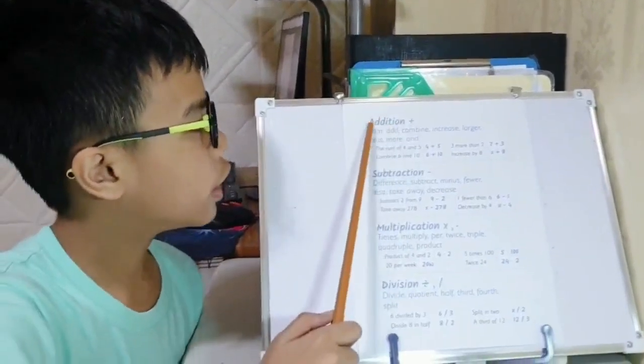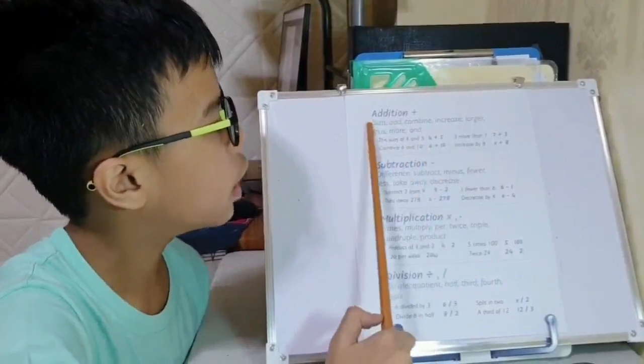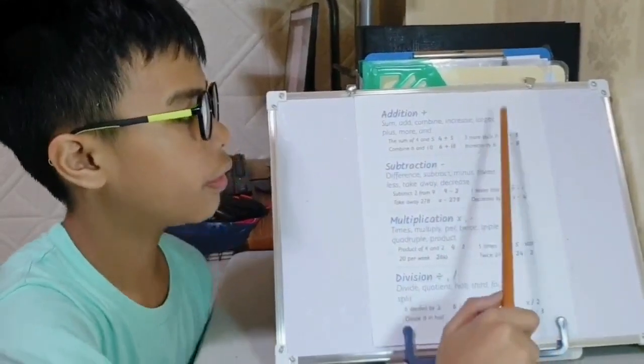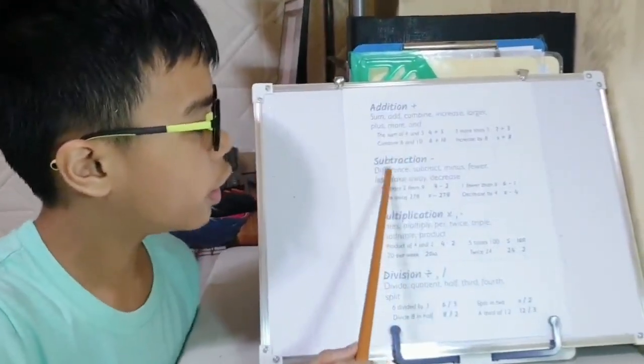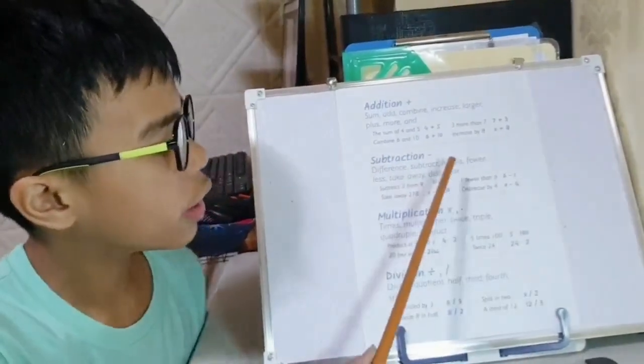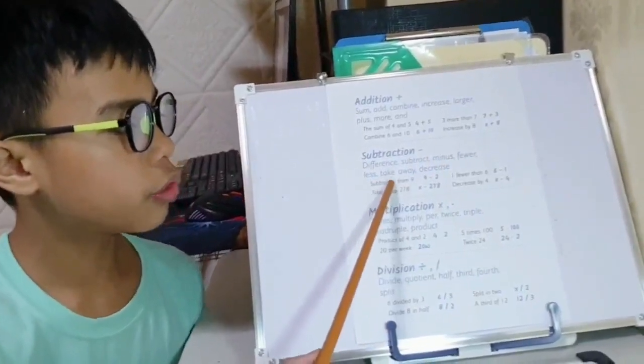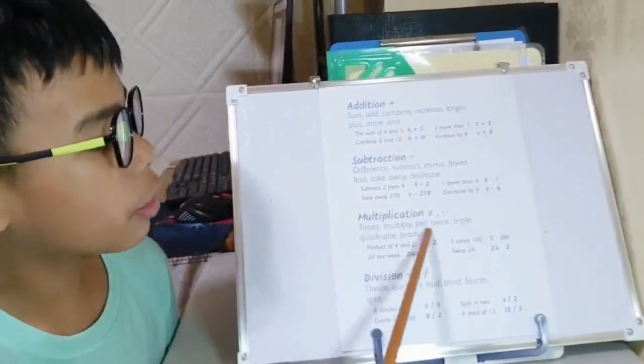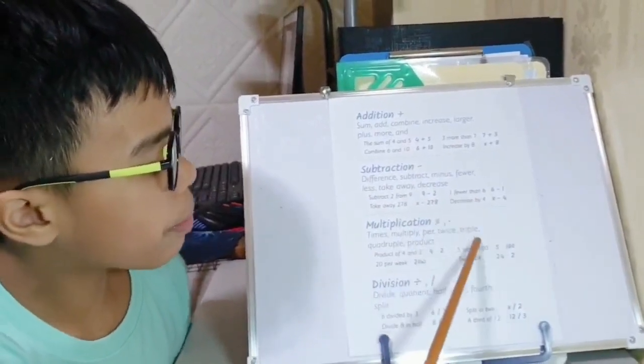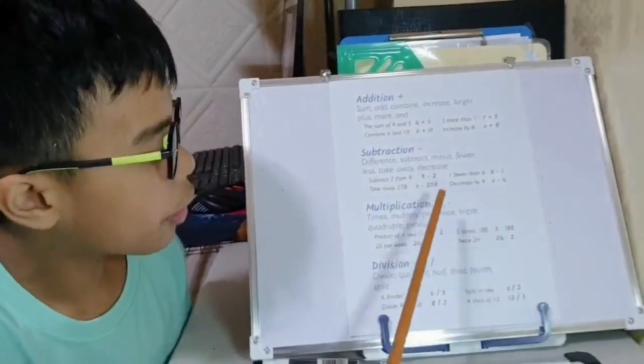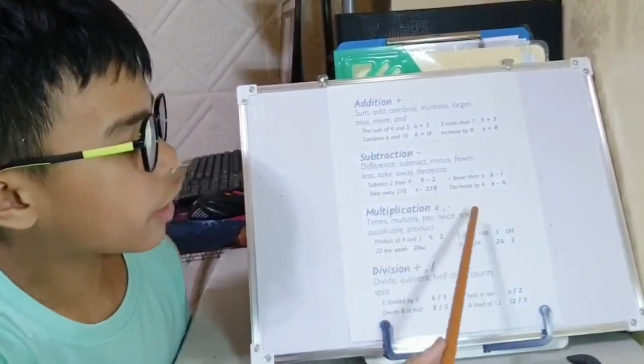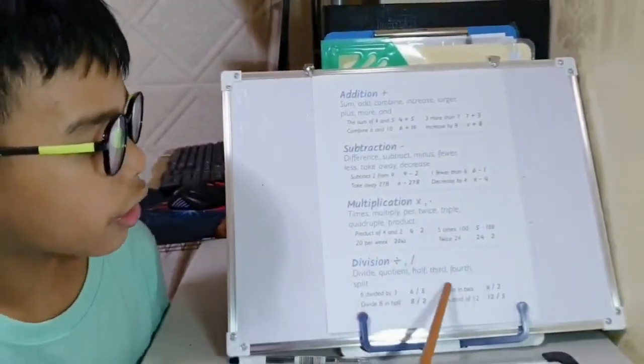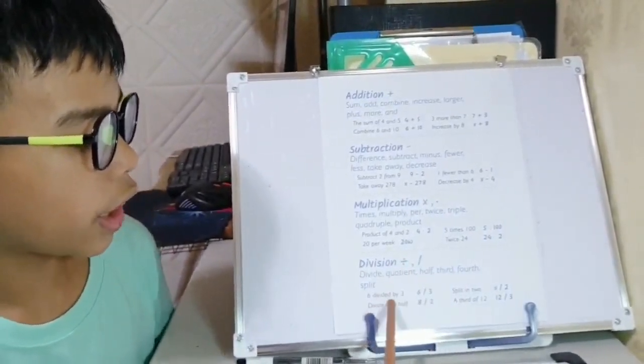For addition: sum, add, combine, increase, larger, plus, more, and. Examples are sum of 4 and 5, 3 more than 7. For subtraction: difference, subtract, minus, fewer, less, take away, decrease. Example is subtract 2 from 9, decrease 4 by 4. For multiplication: times, multiply, per, twice, triple, quadruple, product. Example: product of 4 and 2, 5 times 100. For division: divide, quotient, half, third, fourth. Like 6 divided by 3, divide 8 in half.